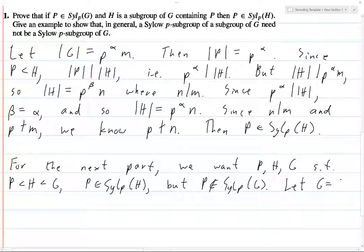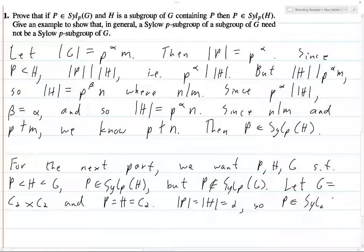And it turns out it's not very hard. If you think about this, it's not really tough to come up with a counterexample. So let G be C2 cross C2, and P equals H equals C2. Order of P equals order of H equals 2. So then obviously P is in... because normally you need something of the form P to the alpha times M, and here P is 2, alpha is 1, and M is just 1. And obviously P does not divide 1, and so we have P is in the Sylow 2 of H.